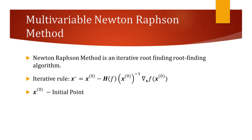The Newton-Raphson method is an iterative root-finding algorithm. It can also be used as a second-order optimization algorithm to find the minima of a function. For a multivariable function, given an initial point, the next point which is closer to the minima of a function can be approximated using the formula on the slide.